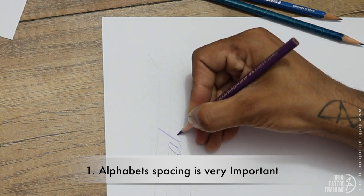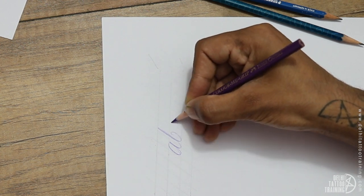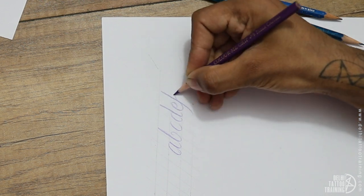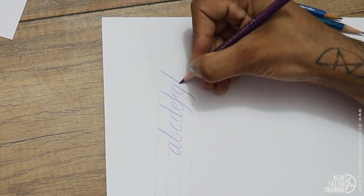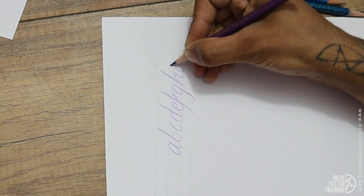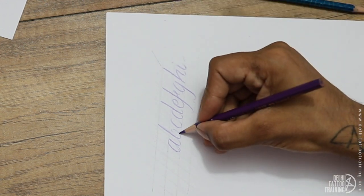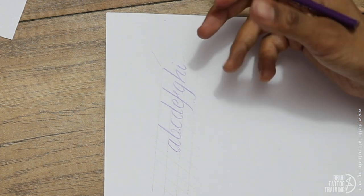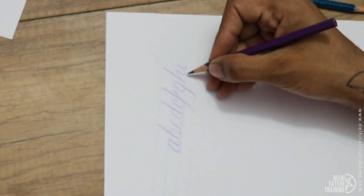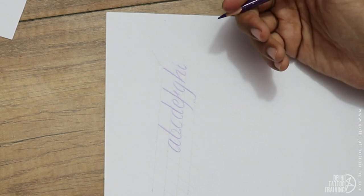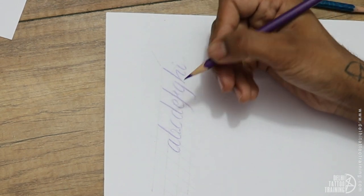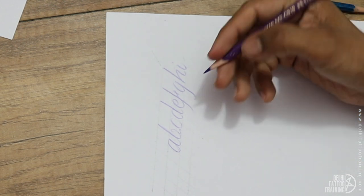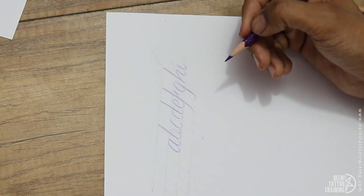Here I have drawn a couple of alphabets. If you notice, the spacing between the alphabets have to be the same. This will give a very good symmetry to the alphabets. The top of all the alphabets should not go above the ascender line and the bottom should not go beyond the descender line.